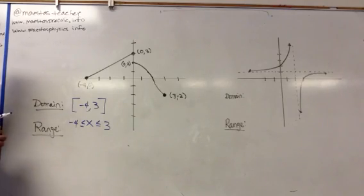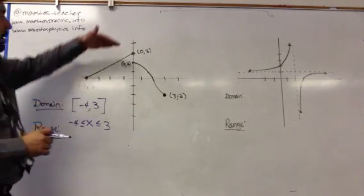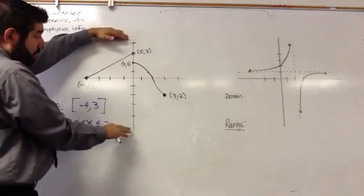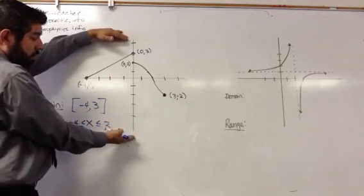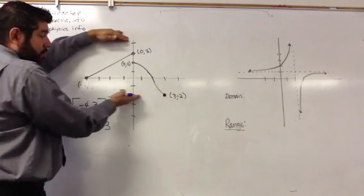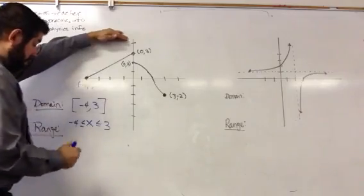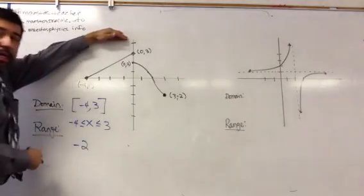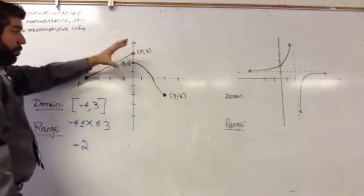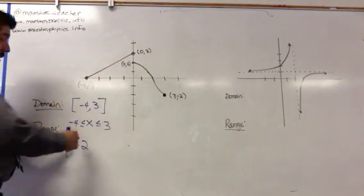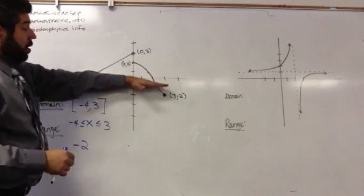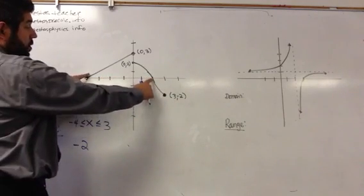We can also do this for the range, except for the range we're going to look at the y axis. So we're going to look at this graph and look at the smallest y value — we're going to start down here and go up. Our smallest y value in our graph is right here at negative 2. From that, we're going to continue going, and any breaks that this has, we're going to have to break it off in our interval notation. But in this case there are no breaks, because as we continue, all of these y values are in this graph.